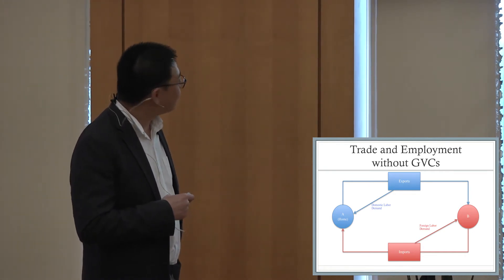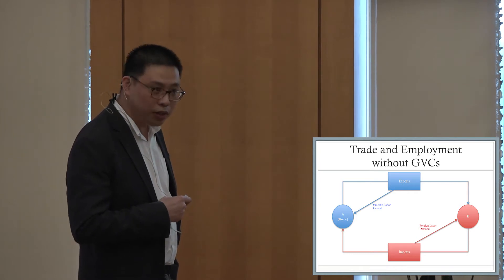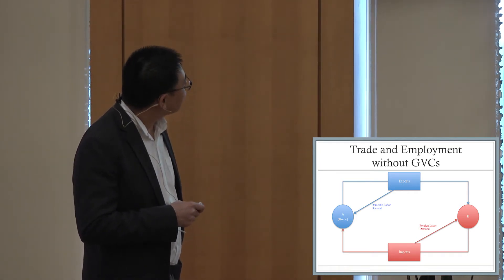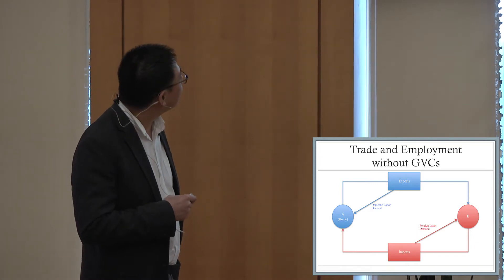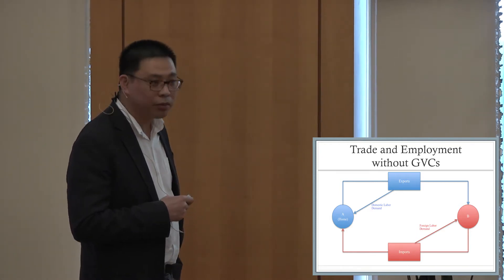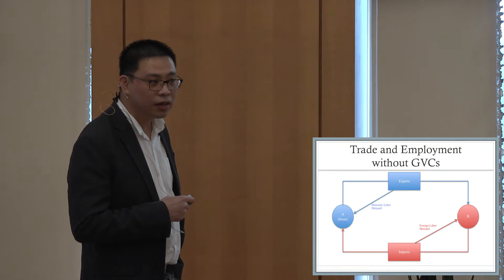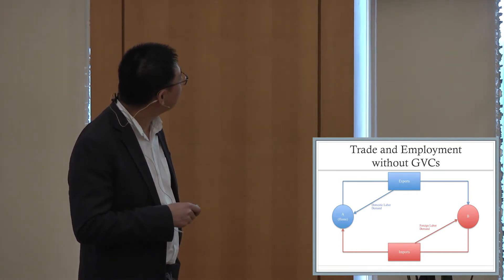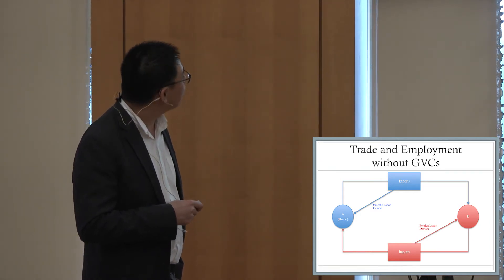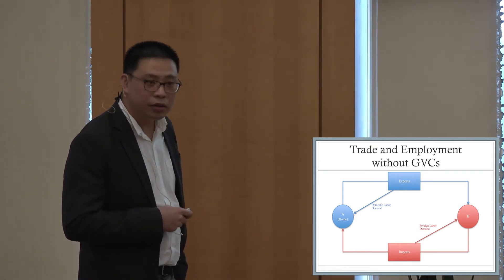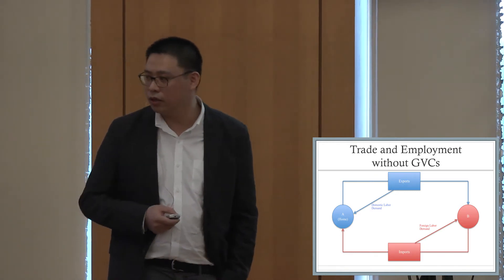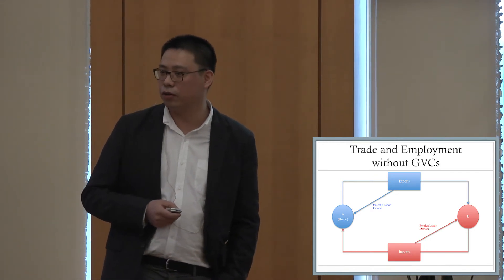To give you a picture, imagine a world without a global value chain where all exports and imports are final goods. Country A exports goods and services to Country B, which generates domestic labor demand. At the same time, if you import goods and services from Country B, you generate foreign labor demand. That's the simple case with only final goods trade.